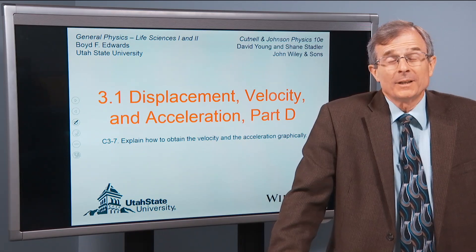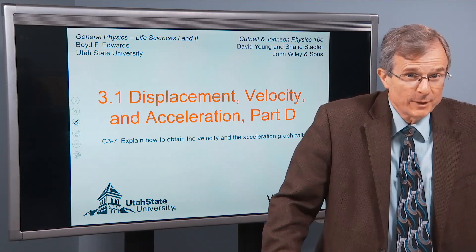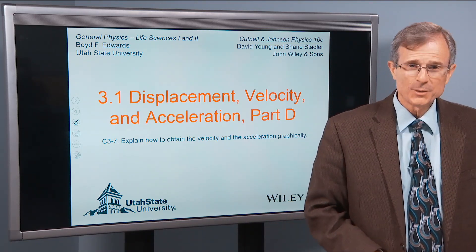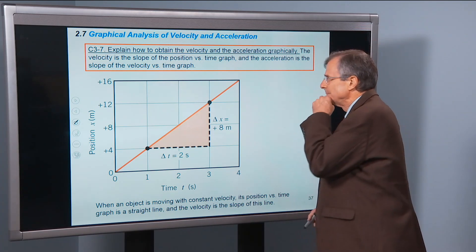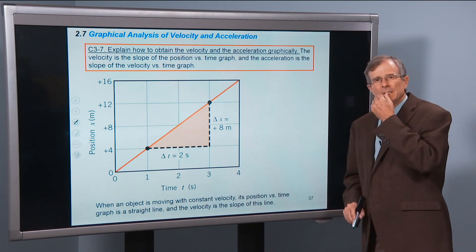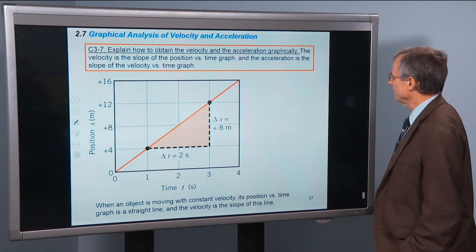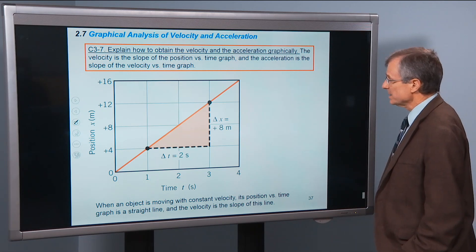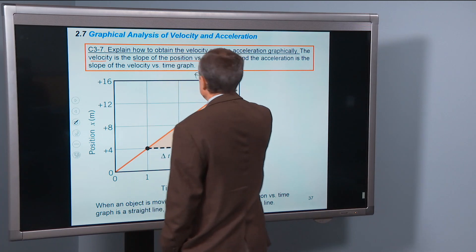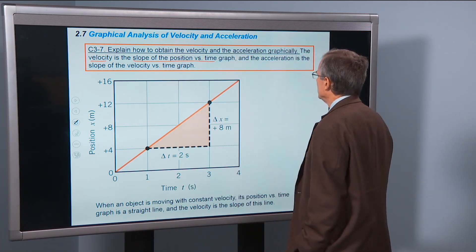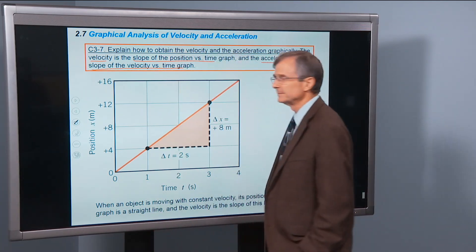Let's talk about velocity and acceleration graphically — how to do these graphs. There's just one concept to understand: the velocity is the slope of the position versus time graph, and the acceleration is the slope of the velocity versus time graph. Simple as that.